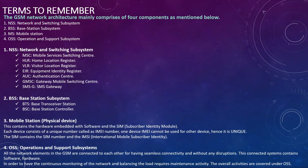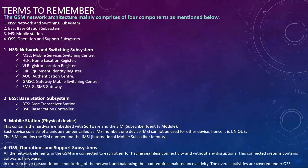Diving deeper into NSS — the network and switching subsystem — in the location update video we already saw network elements like MSC, HLR, and VLR. Within NSS, the main elements are: MSC which is the mobile services switching center, HLR which is the home location registry, VLR which is the visitor location registry, EIR which is the equipment identity registry, AUC which is the authentication center, GMSC which is the gateway MSC, and SMSC which is the SMS gateway.